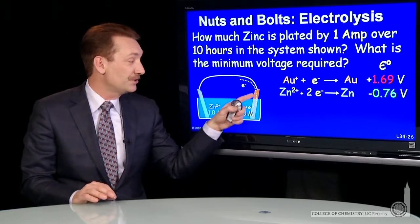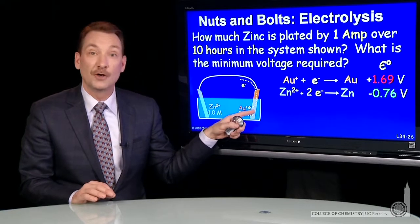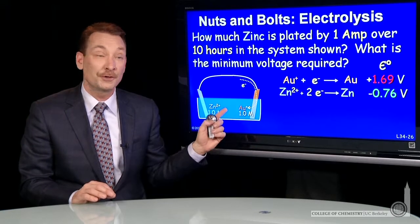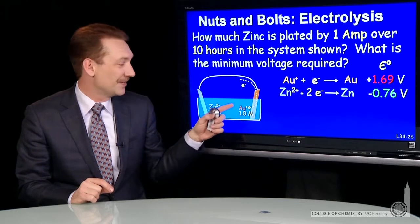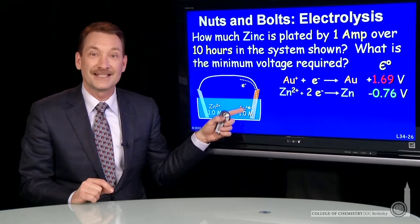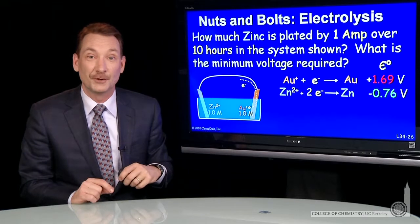So if gold is reduced, electrons flow to the gold electrode. And at the gold electrode, gold metal is plated out from ions. So gold ions accept electrons. They're reduced to gold metal.